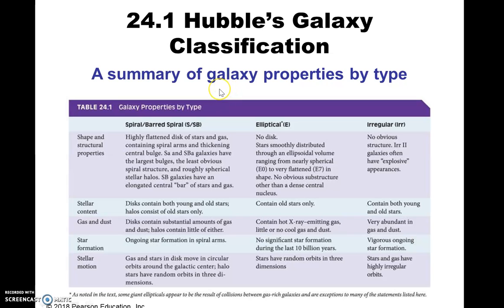This slide summarizes some of the different things. For spiral galaxies and barred spirals — the classification is S and SB — you get this flattened disc. It's obviously not completely flat, but from a long ways away it looks relatively flat. You have stars and gas and dust in a lot of cases, and it has spiral arms. It has a thick central bulge.